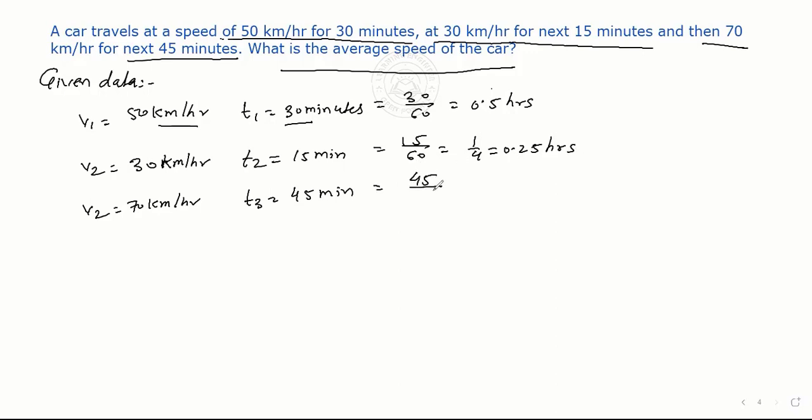And for the third one, 45 divided by 60, 15 goes into both, giving 3 by 4, which we can write as 0.75 hours.